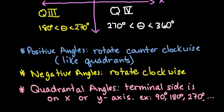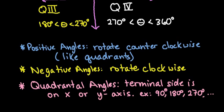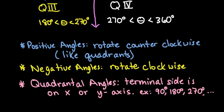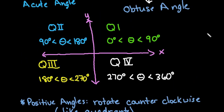Quadrantal angles are angles that have a terminal side that falls on either the x or the y-axis. For example, 90 degrees, 180 degrees, 270 degrees, etc.